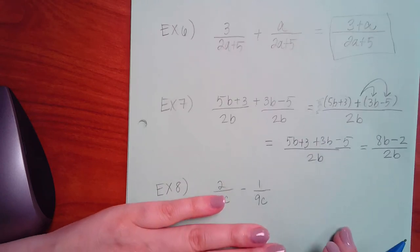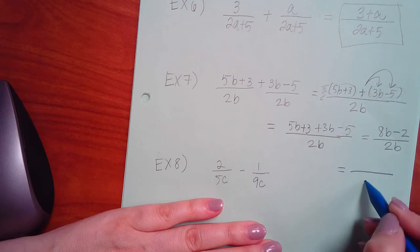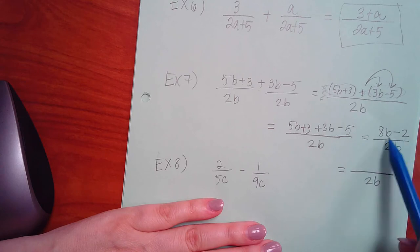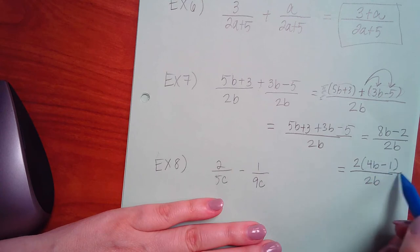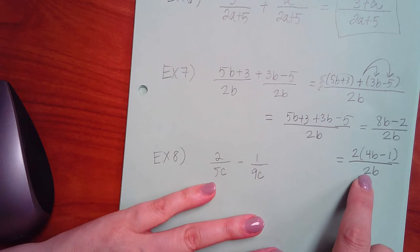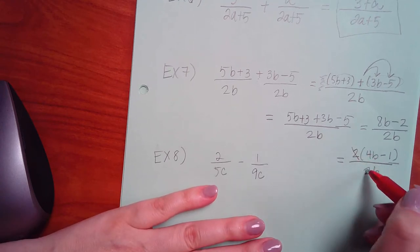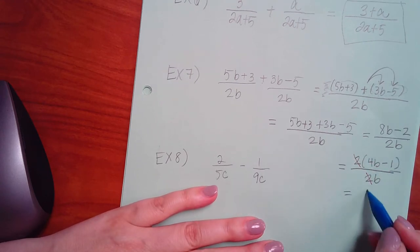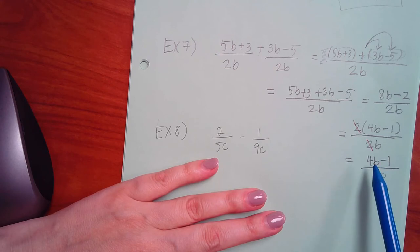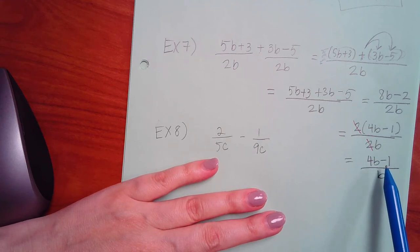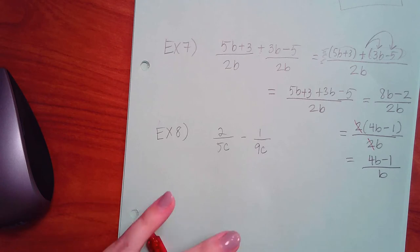This one can be reduced. Can I factor something out from the top? Is there any number that goes both into 8B and 2? 2. So I'd have 4B minus 1. And then this 2 can cancel with that 2 because they're both factors. Those 2's are both being multiplied by something. So you can cancel them or reduce them and you end up with 4B minus 1 over B. Now this B cannot cancel because not only is it being multiplied by something, it's also being subtracted. So you cannot cancel that B. It has to just be multiplied only in order to cancel it.